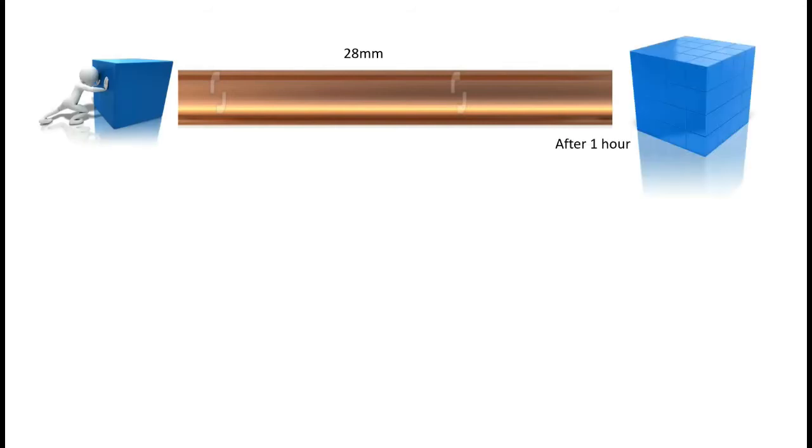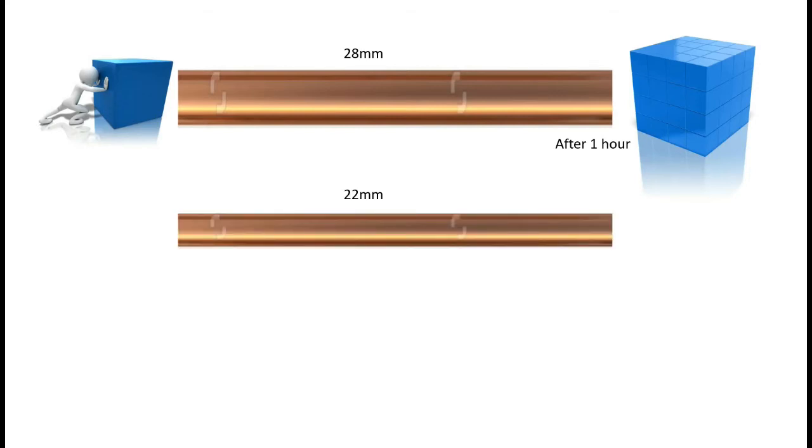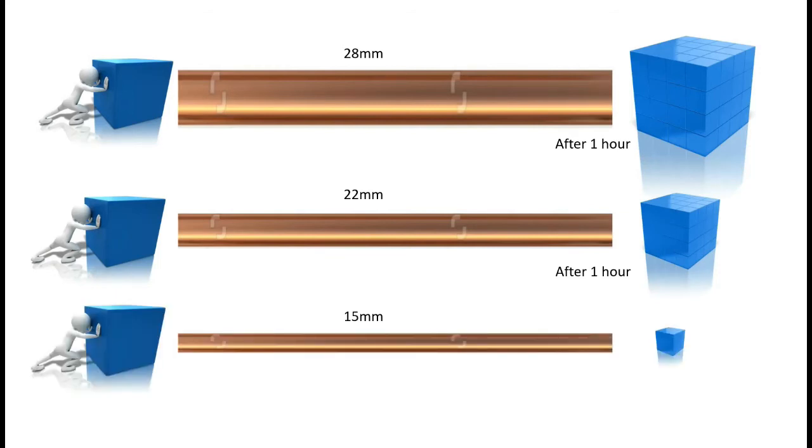Now physics will tell you, and common sense will tell you, that the larger the pipe, the more cubic metres of gas it will be able to pass in an hour. So a 28mm pipe, a 22mm pipe and a 15mm pipe will all pass different amounts of gas in an hour. The 28mm will obviously pass more gas than the 15mm.